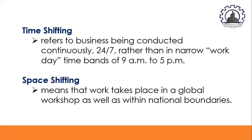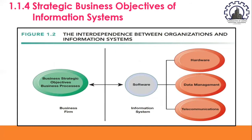The next key area is the strategic business objectives of information systems. What makes information systems so essential today? Why are businesses investing so much in information systems and technologies? In the United States, more than 57 million managers and 120 million workers in the information and knowledge sectors rely on information systems to conduct business.